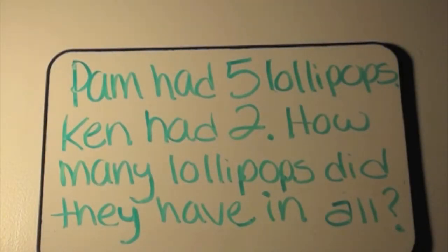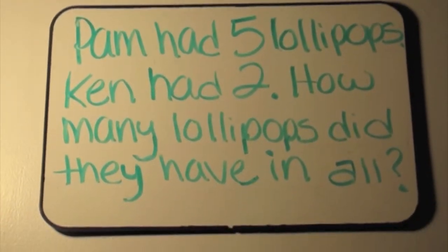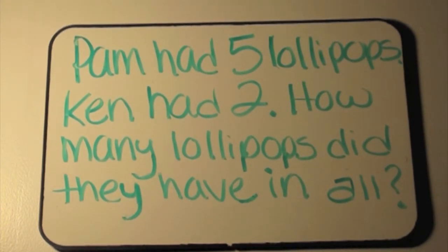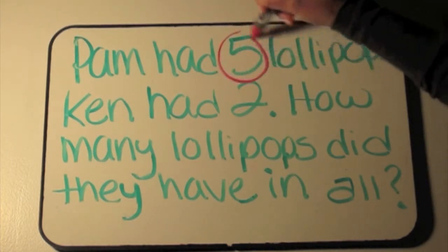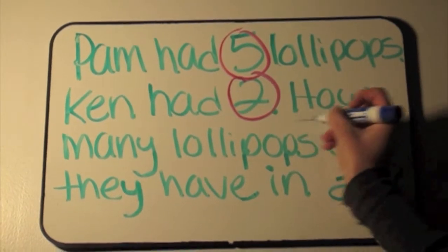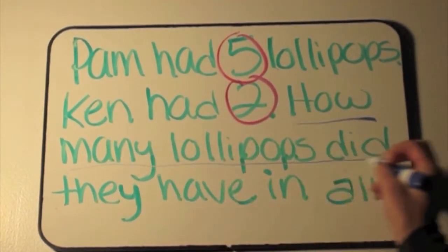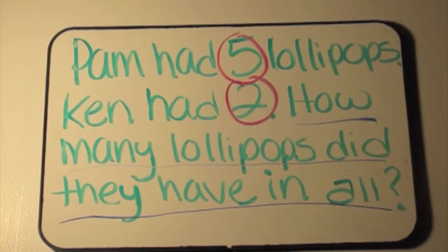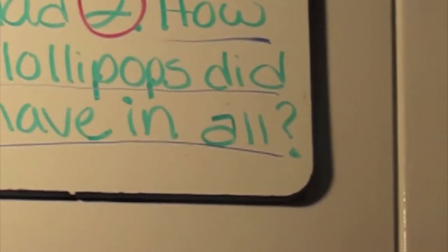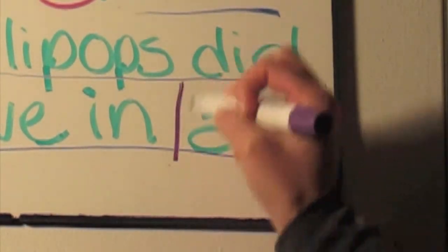Here's another example of a word problem. Pam had five lollipops. Ken had two. How many lollipops did they have in all? The first step in the CUB strategy is circling the numbers, which is five and two. The second step is underlining the question: how many lollipops did they have in all? The third step is boxing in key words — in this problem, it will be 'all'.